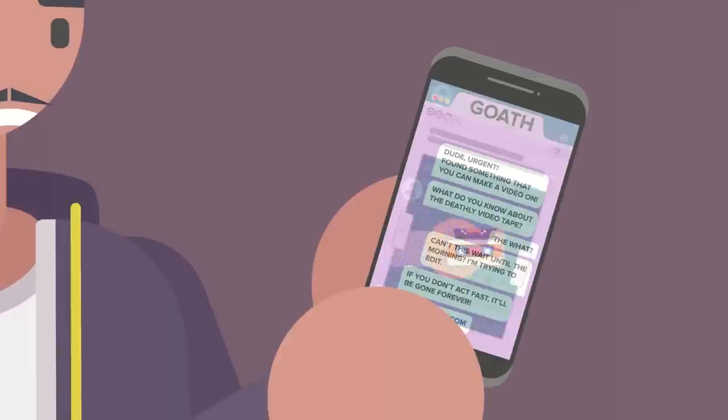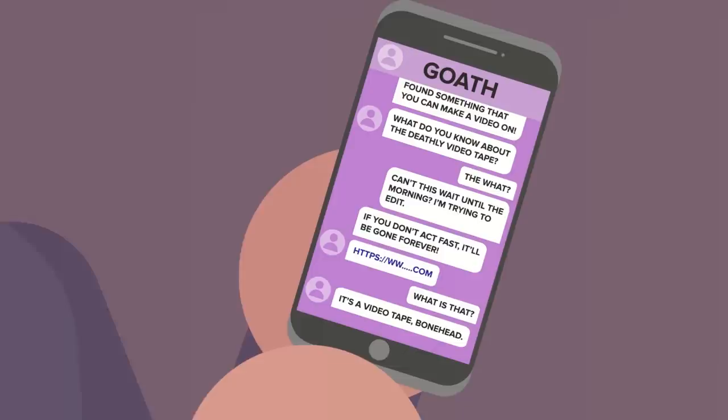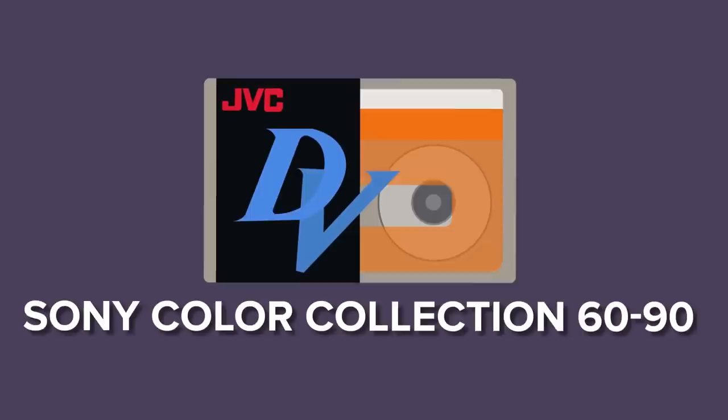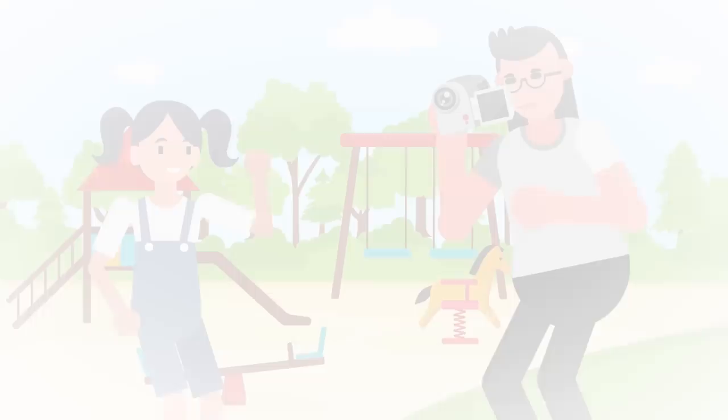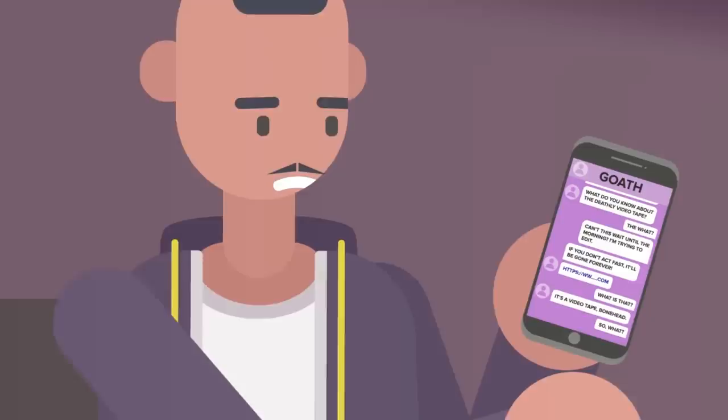What is that? Holden asked. It's a videotape, bonehead. Goethe fired back. Although they'd never met in person, Holden always got the sense his friend was a little older than he was. Looking back on the seller's ad, it was for a second-hand Sony Color Collection 60-90 minute Mini-DV videotape, a type of cassette used in a lot of old handheld recording cameras. So what? Holden asked in another text. Look, there have been rumors for ages about something called the Deathly Videotape, Goethe replied in a series of rapid-fire messages.